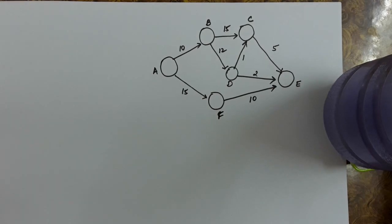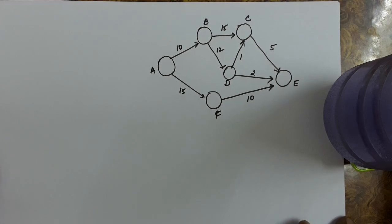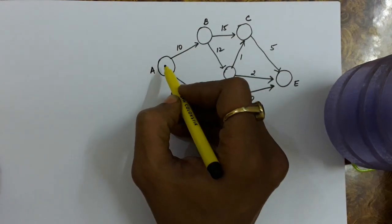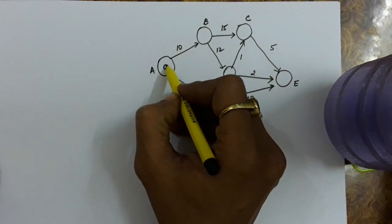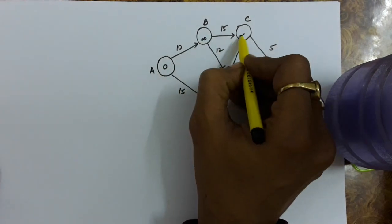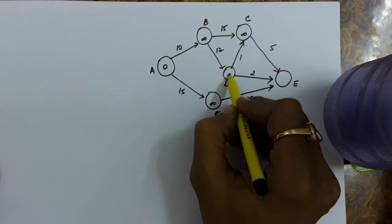Let's take another example for this single source shortest path algorithm. The source is A. So the distance of source will be 0 and distance of all other vertices will be set as infinite.